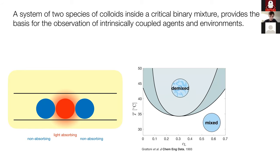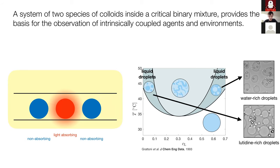The non-absorbing particles come together near a light-absorbing one because we use a critical binary mixture — in this case water and an oil-like substance called lutidine — which phase-separates at a given temperature. You can see the phase diagram: the colored region is demixed, the white region is mixed. At a certain temperature, water and lutidine separate; they also remix below that temperature. In the off-critical region you get liquid droplets. We focus on the right side of the diagram because we have hydrophilic particles that want to be inside the water-rich droplet.